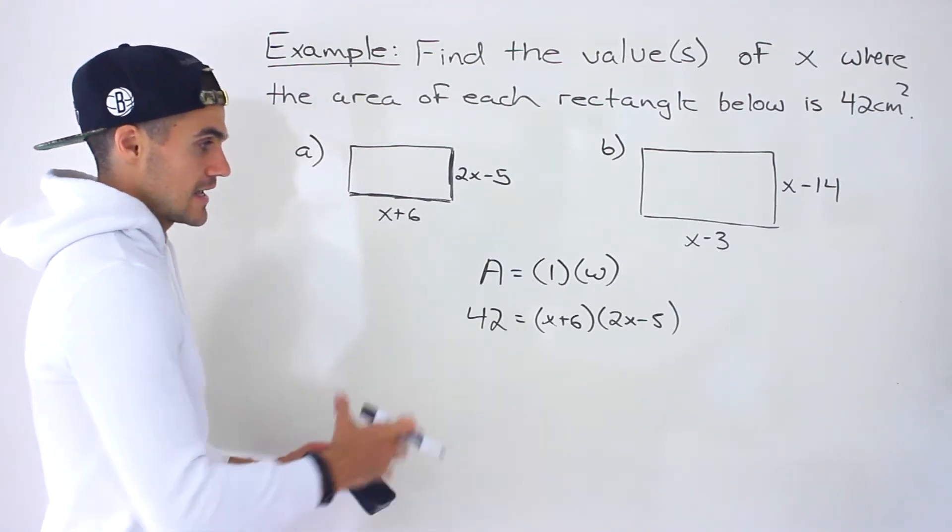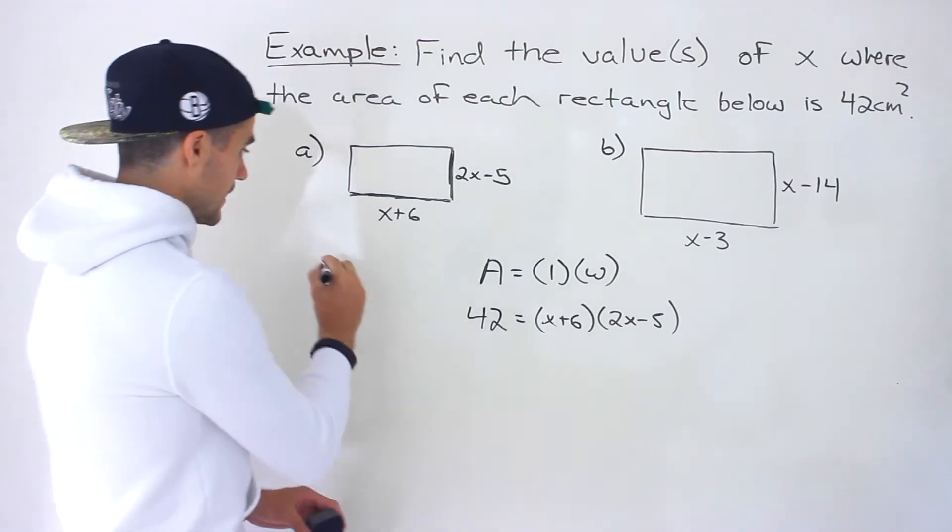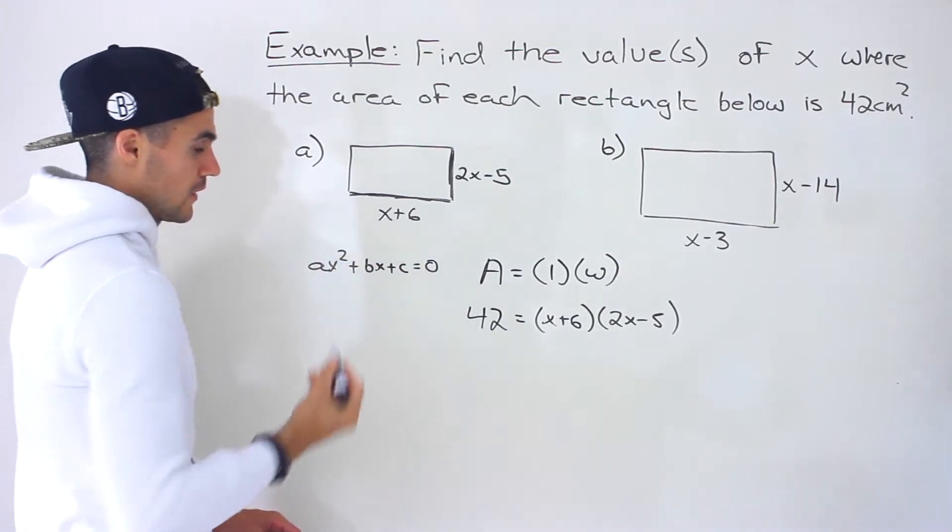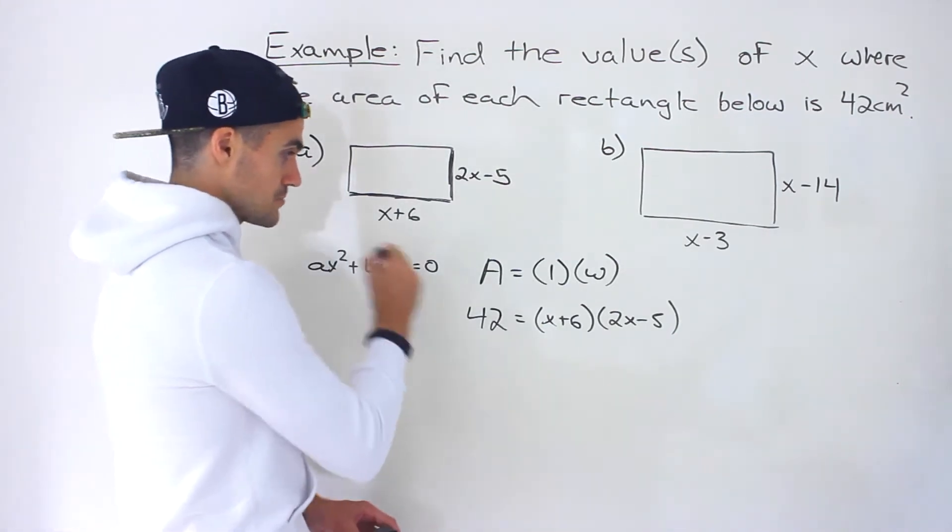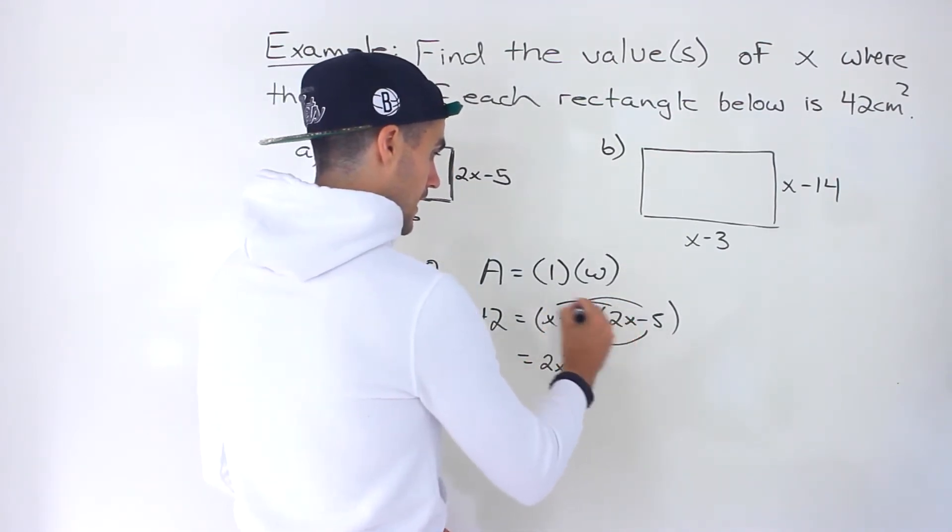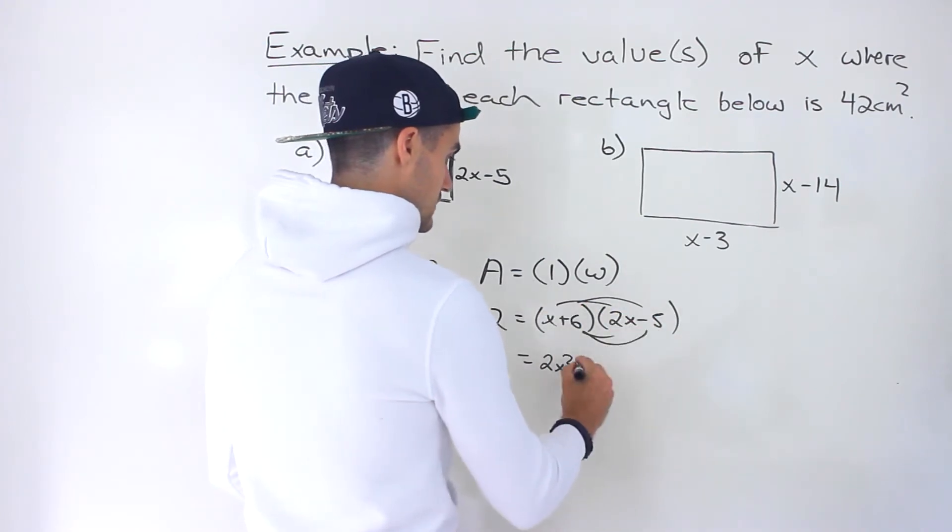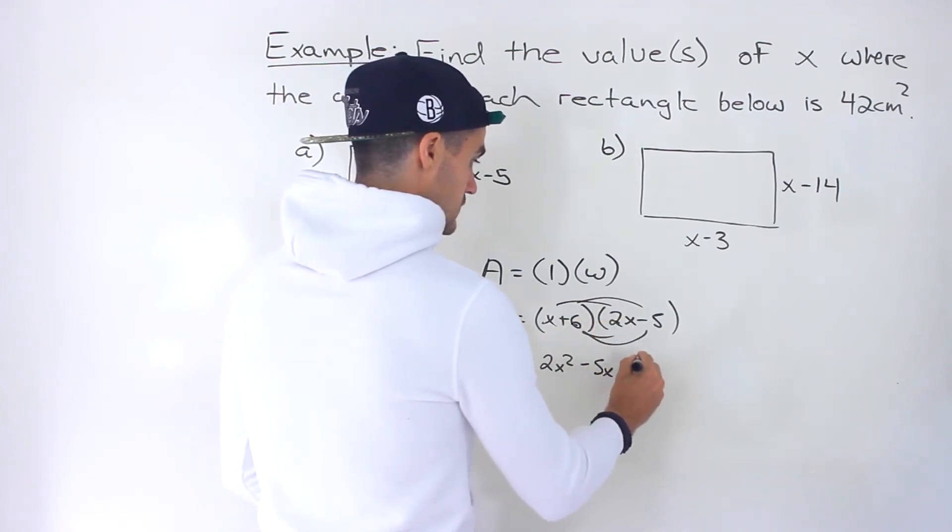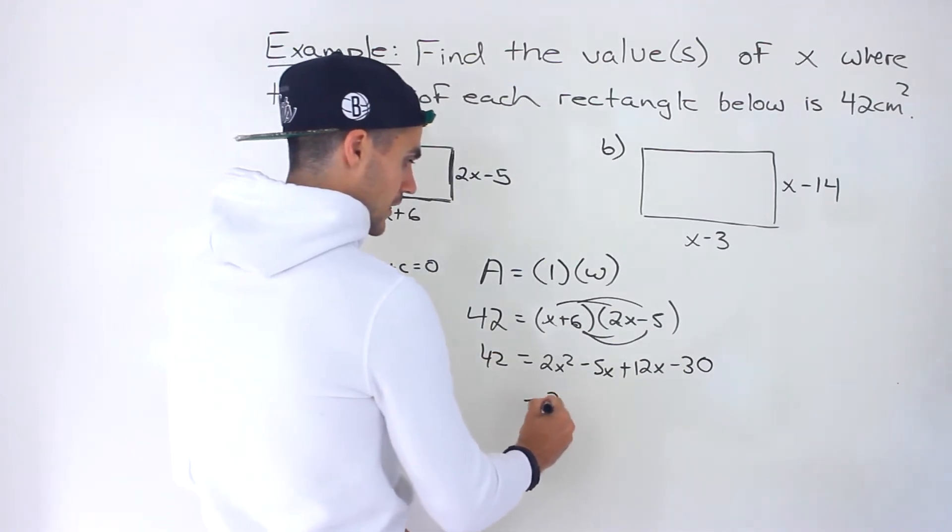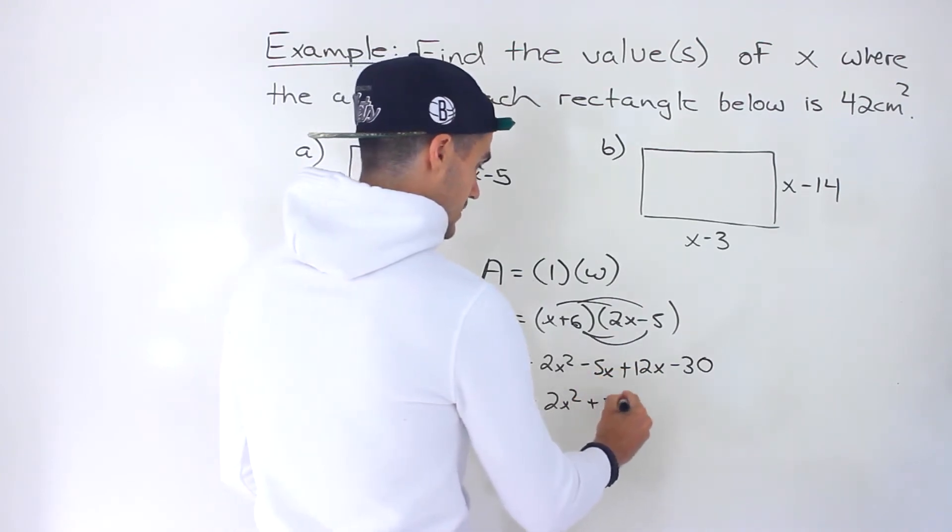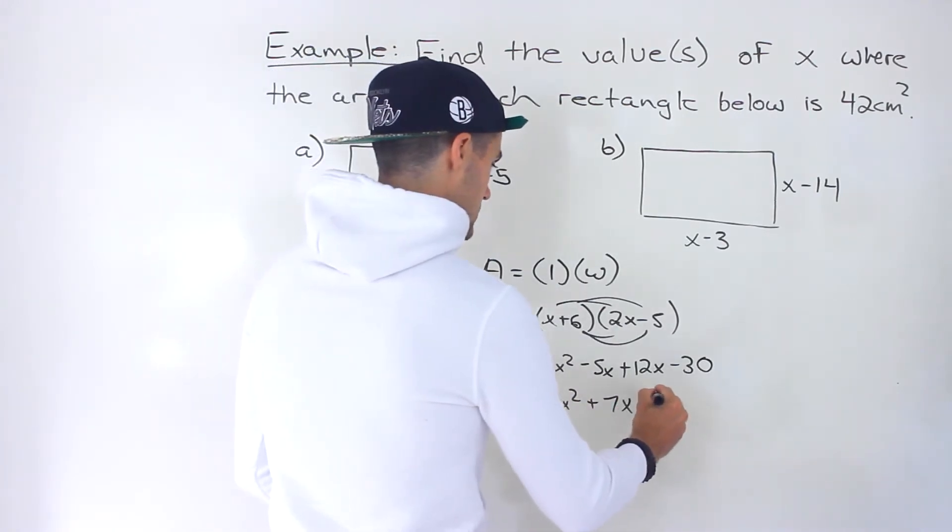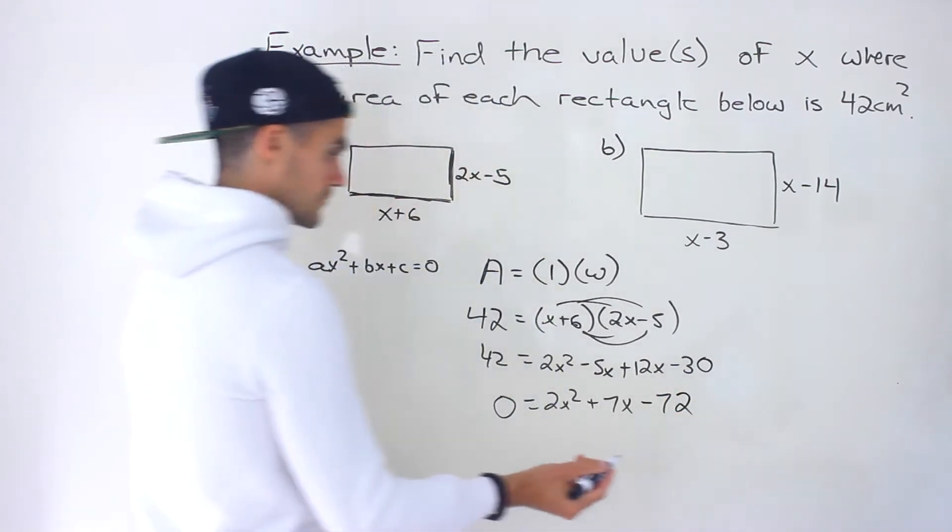And so what you want to do in this case is pretty much expand everything, bring everything on one side, get it in that format, ax squared plus bx plus c equals zero, and then go into solving that quadratic equation. So let's first put it in that format. So I'm going to expand everything over here. So we'll have 2x squared. x times negative 5 gives us negative 5x. 6 times 2x gives us positive 12x. And then we'll have minus 30 like that. Then we've got the 42. And then we'll have 2x squared. These two net out to 7x. And then let's bring the 42 over. That'll become a negative 42. And so we'll have minus 72 like that.